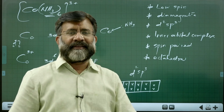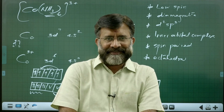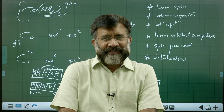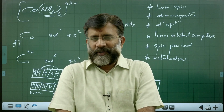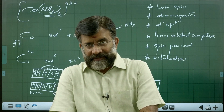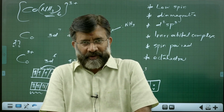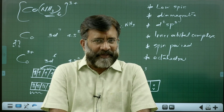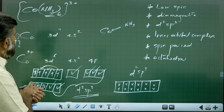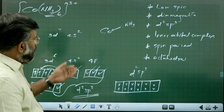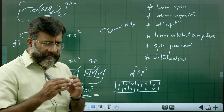So for hexamine cobalt(III) complex: it is a D2SP3 hybridization, inner orbital complex, low spin complex, spin paired complex, diamagnetic system, and octahedral geometry. VB theory is able to explain what kind of hybridization is involved — whether inner D or outer D orbitals, and whether it is a low spin or high spin, spin paired or spin free complex.